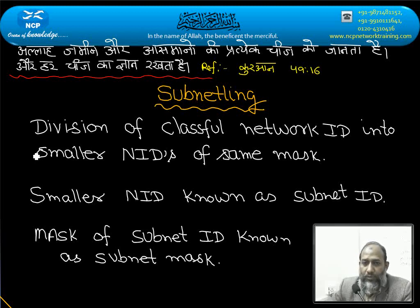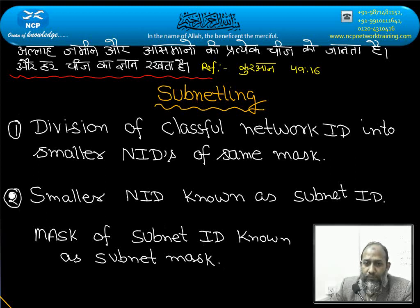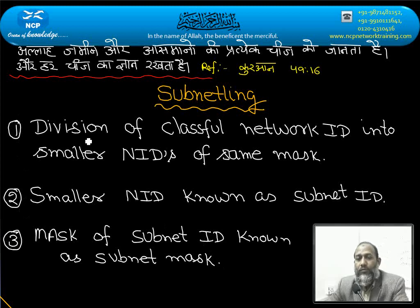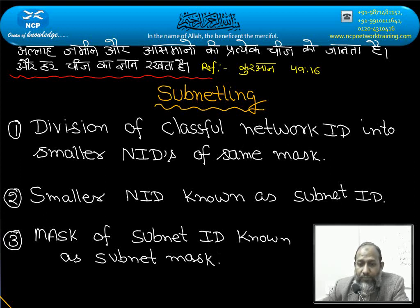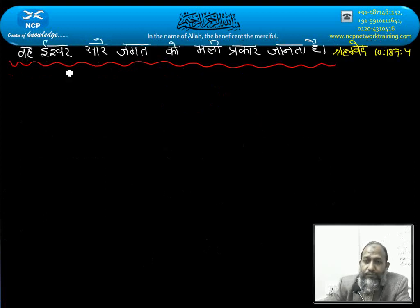Remember these three things: division of a classful network ID into smaller network IDs.